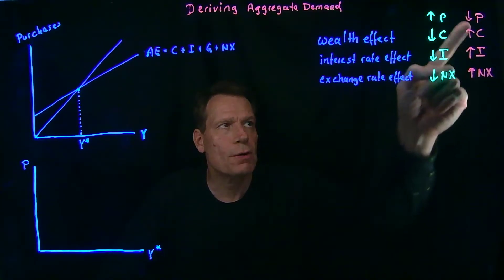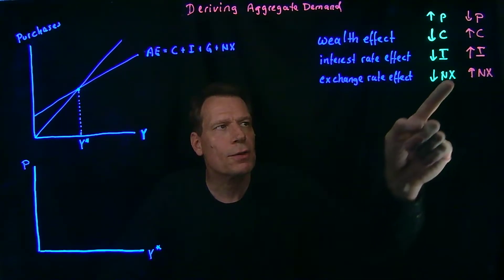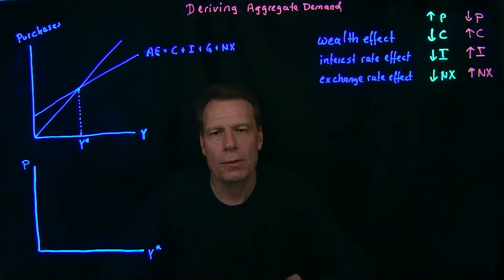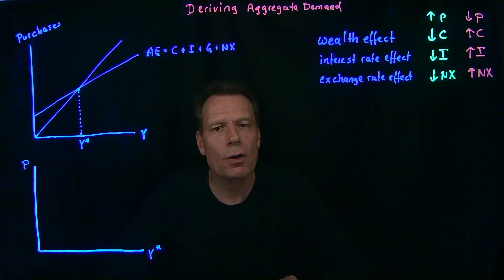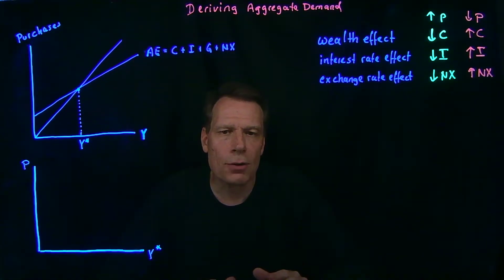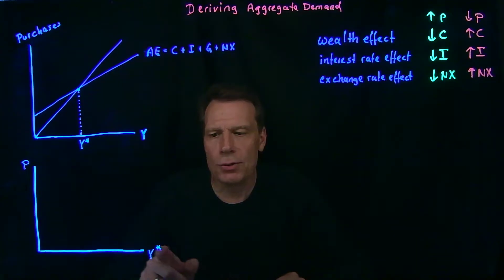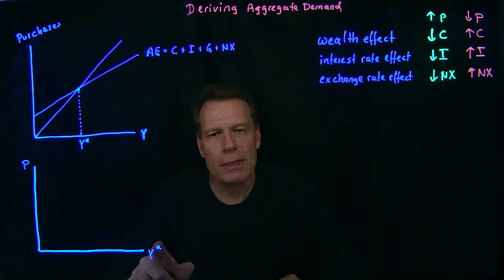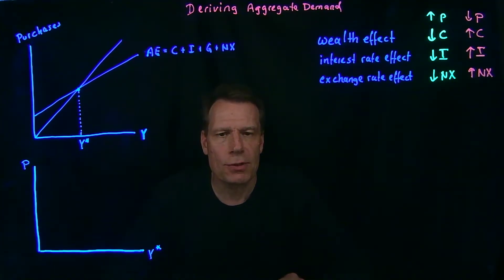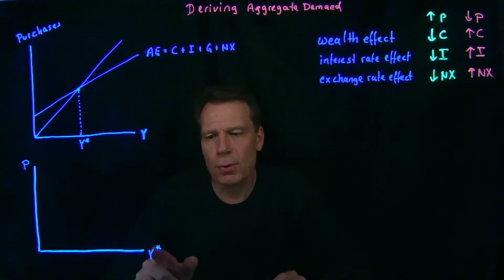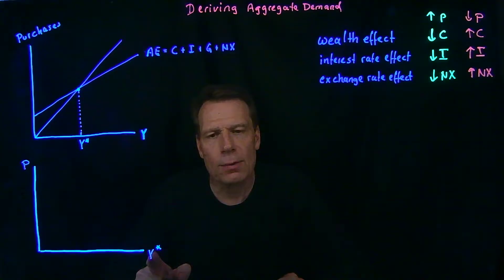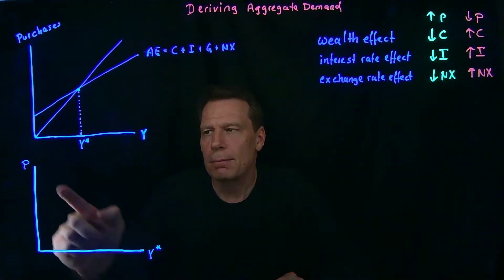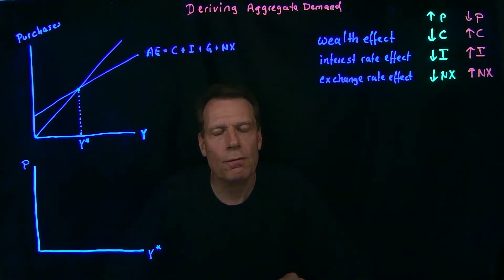Now that we know how changes in the general price level affect different components of aggregate expenditure, we're ready to derive a new curve in macroeconomics — a curve known as aggregate demand. The aggregate demand curve shows what happens to equilibrium GDP as the price level changes. We've put Y-star on the horizontal axis, indicating equilibrium GDP, and P, standing for the price level, on the vertical axis.